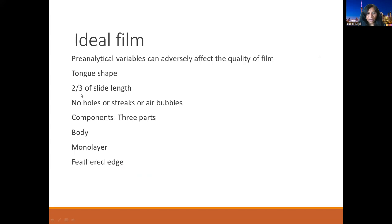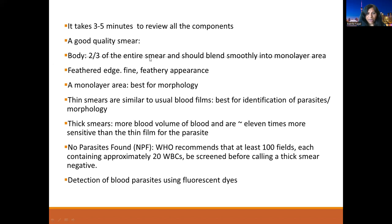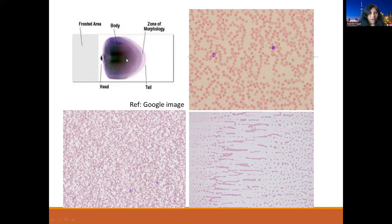An ideal film should have a tongue shape, should cover at least two-thirds of the slide length, and should not have any holes, streaks, or air bubbles. A proper film has three parts: body, monolayer, and feathered edge. The body is two-thirds of the entire smear and should blend smoothly into the monolayer. The feathered edge is fine and feathery; between the body and feathered edge is the monolayer area, which is used for morphology. Thick films are used for parasites — they contain almost 11 times more volume and therefore have 11 times more sensitivity for detection of parasites. WHO recommends that at least 100 fields should be screened before calling a smear negative. Fluorescent dyes can also be used for detection of blood parasites.